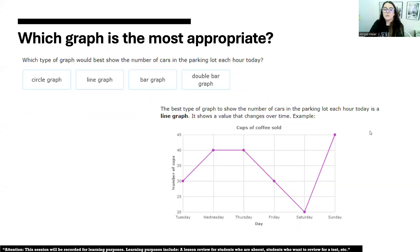Finally, which type of graph would show the number of cars in a parking lot each hour today? Again, we are looking for those keywords. This one says each hour today. Anytime that we're dealing with time, that's going to be a line graph. Changes over time is best represented by a line graph. That would be the best graphical representation in this scenario.